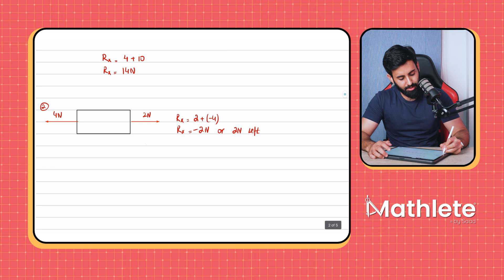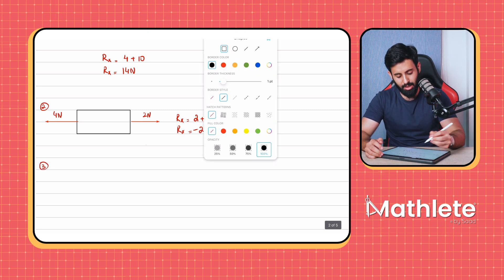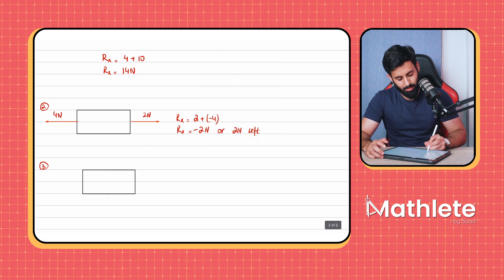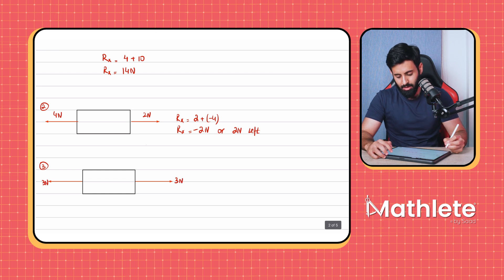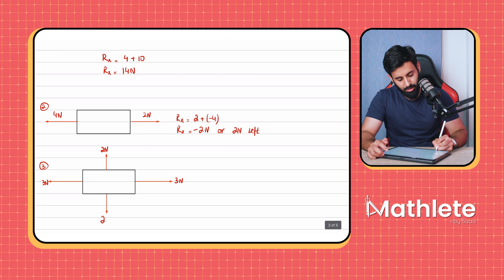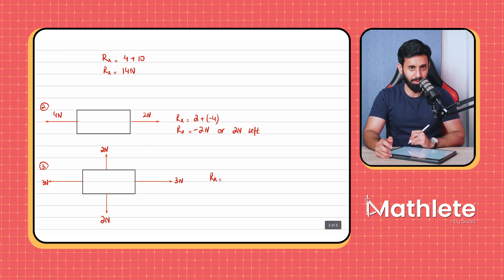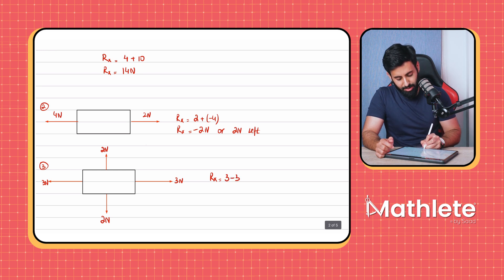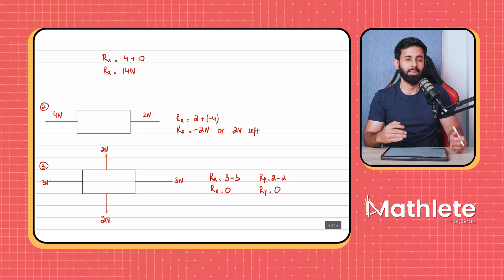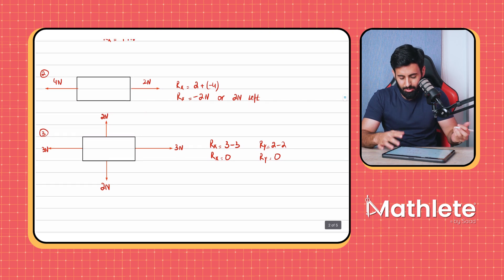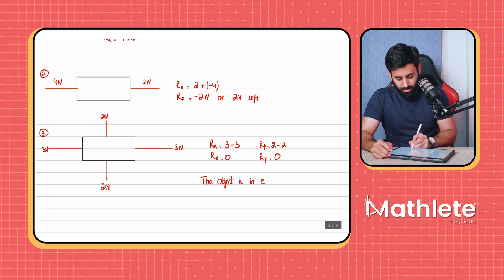Let's do one more example. Say you have an object with one force towards the right and one towards the left, both 3 newtons, and a force of 2 newtons upwards and 2 newtons downwards. The horizontal resultant is 3 minus 3, which equals 0, and the vertical resultant is 2 minus 2, which also equals 0. This means the object is in equilibrium — just a teaser for what we'll learn later.